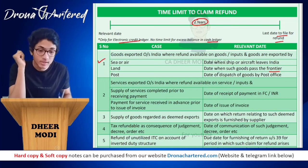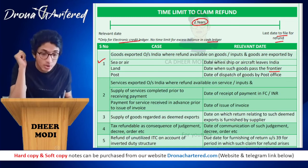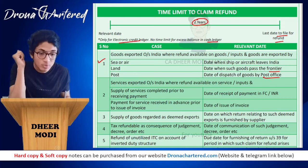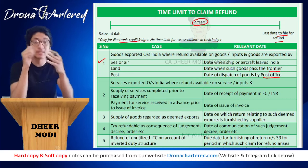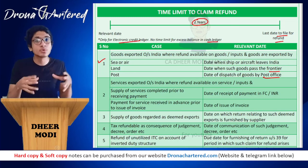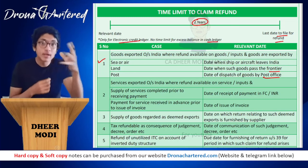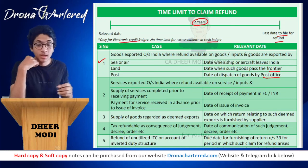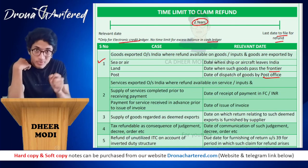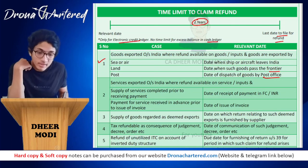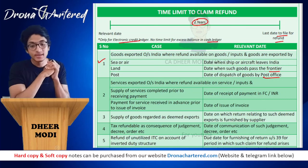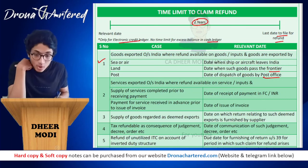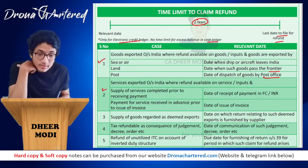For goods exported by post, the relevant date is the date of dispatch of goods by the post office — that is when the post office actually dispatches the goods. For example, if you send goods by post from India to Nepal and give them to the post office, the date the post office dispatches the goods will be the relevant date.